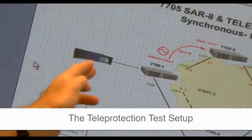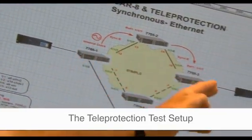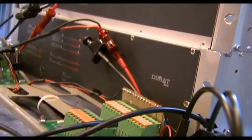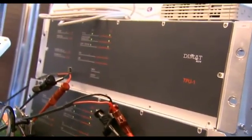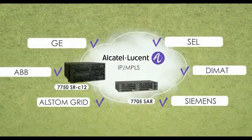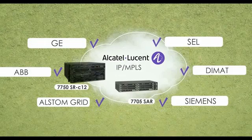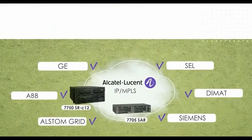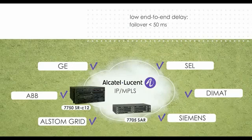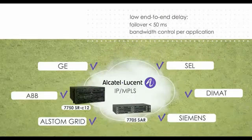Alcatel-Lucent and third-party laboratories have also conducted testing sponsored by utilities or relay manufacturers and evaluated teleprotection equipment from ABB, Alstom Grid, Siemens, ZIV-DIMAT, GE, and SEL connected to Alcatel-Lucent IP MPLS communications equipment. These tests again demonstrated that low end-to-end delay could be achieved, that failover capabilities met the sub-50ms standard for traffic rerouting, and that control of the bandwidth required per application was achieved with an Alcatel-Lucent IP MPLS network.